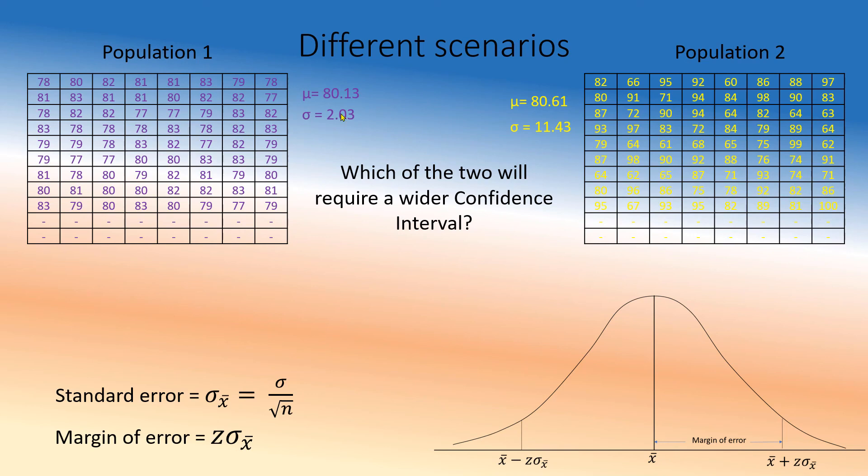So the conclusion is, if the population standard deviation is small, you will get a tighter interval and your margin of error is small. Now, assuming everything else is constant, right? Same sample size, same everything else.